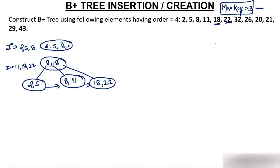Now insert 32. Where does 32 come? Obviously 32 comes to the rightmost node, and there is no issue — 32 can be inserted there.